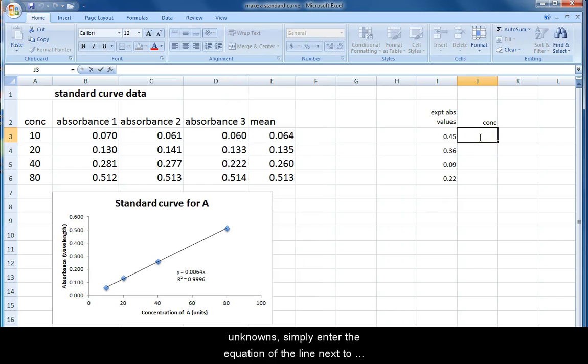To calculate the concentrations of your unknowns, simply enter the equation of the line next to your known absorbance value. The absorbance is the Y value in your equation, so reference the cell holding the absorbance value when you enter the equation. See video one for more info on entering equations.